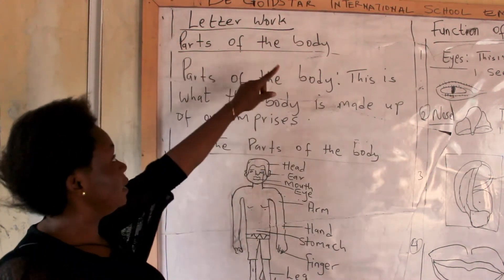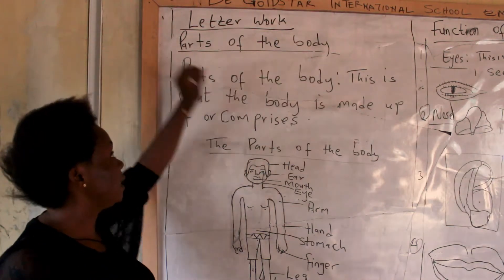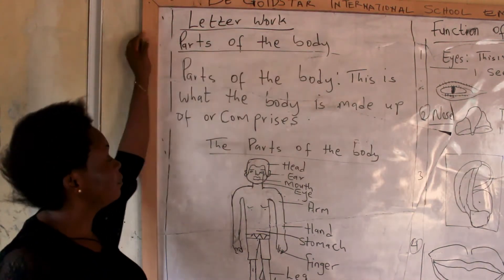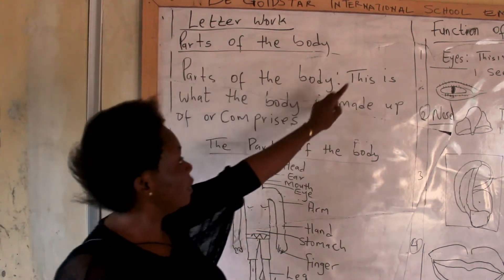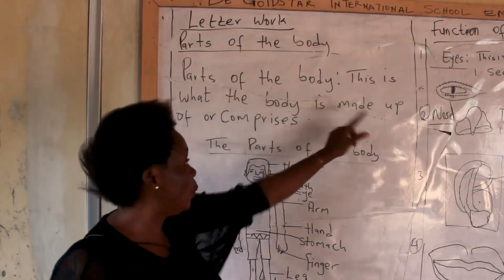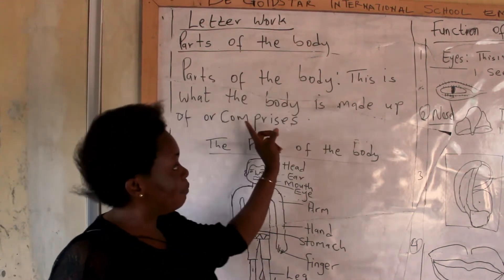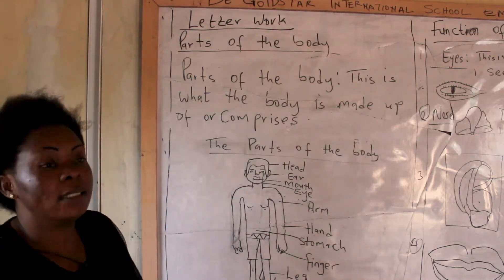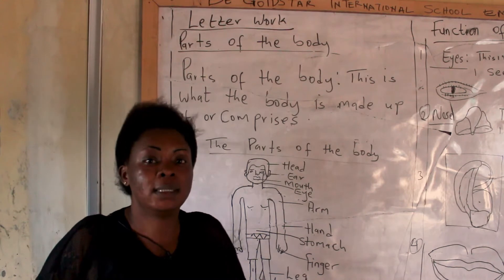Parts of the body. Our topic is what? Parts of the body. Now, what is parts of the body? Parts of the body — this is what the body is made up of or comprises. That is what the body is made up of, what is contained in the body.